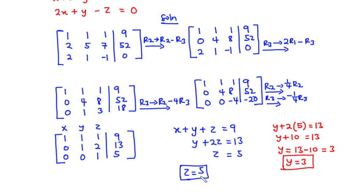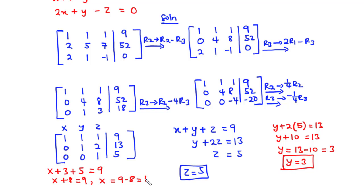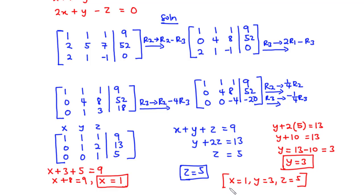Substituting y equals 3 and z equals 5 into equation 1: x plus 3 plus 5 equals 9, so x plus 8 equals 9, giving x equals 1. Therefore, x equals 1, y equals 3, and z equals 5. Since we have at least one solution, this system is consistent.